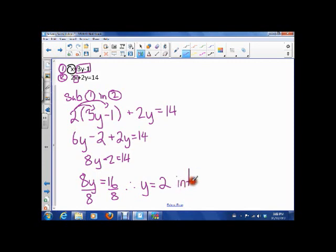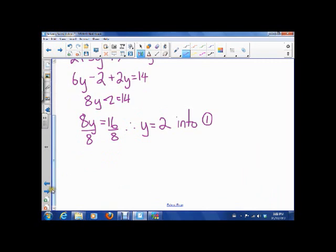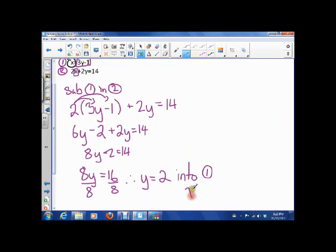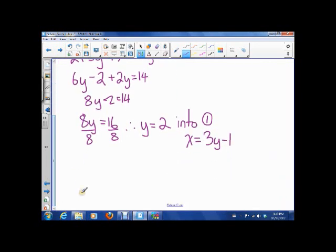So I'm going to take this and I'm going to sub it into equation 1. And equation 1 is x is equal to 3y minus 1. So now instead of y, I'm going to use that 2. So I'll have 3 times 2 minus 1. So x is 6 minus 1, which is 5.